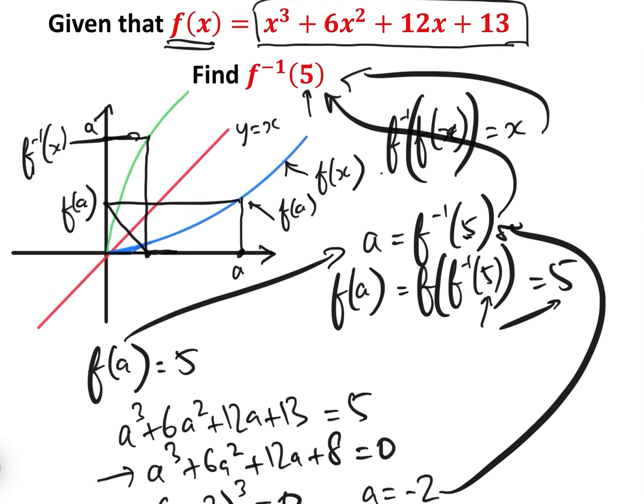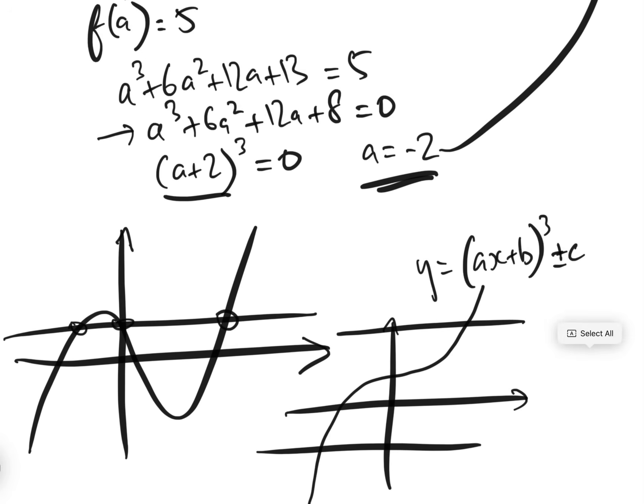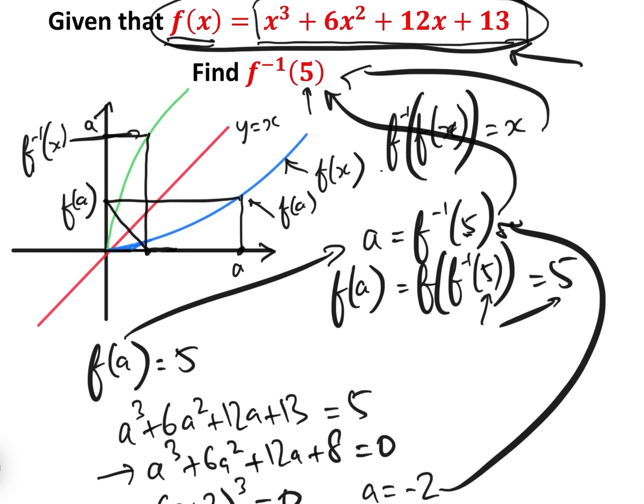So in actual fact, given that there is no restriction on the domain in the question, we can be pretty sure that this function here is of the form (ax plus b) cubed plus or minus c, and therefore we can try and find the inverse. So let's go.